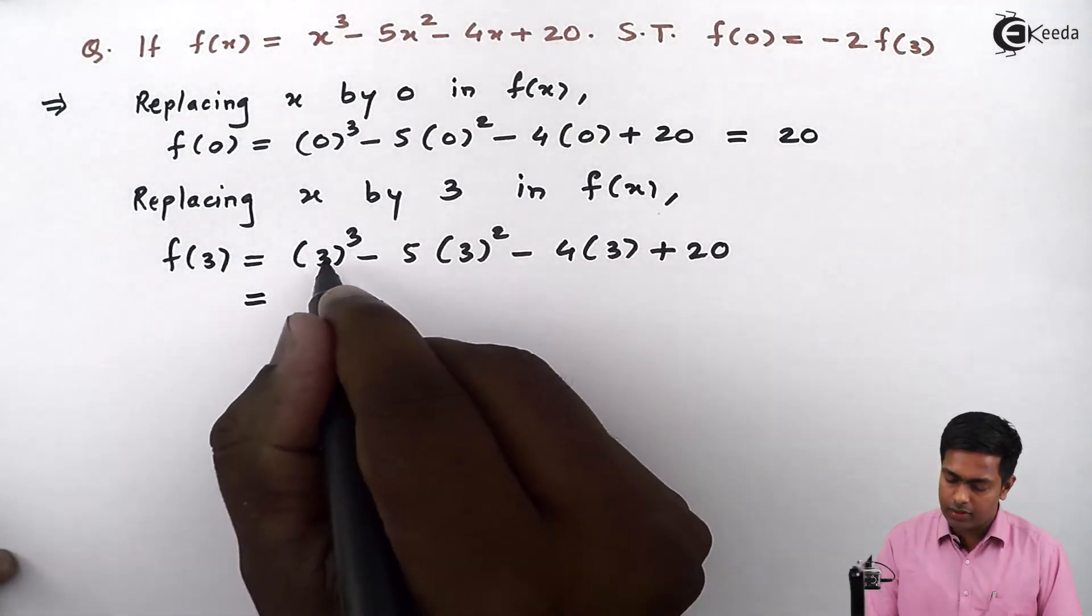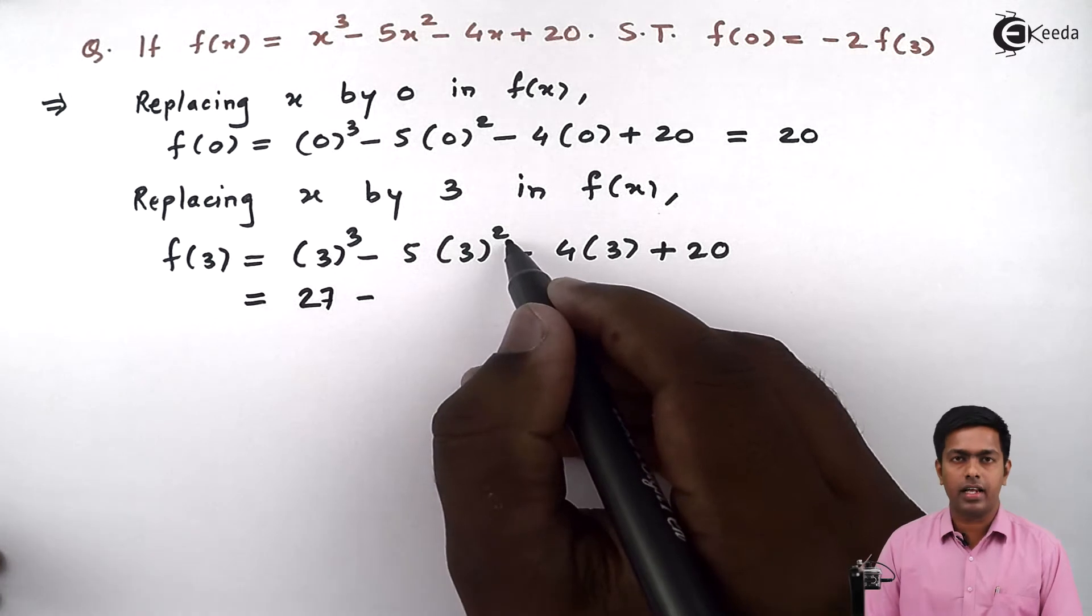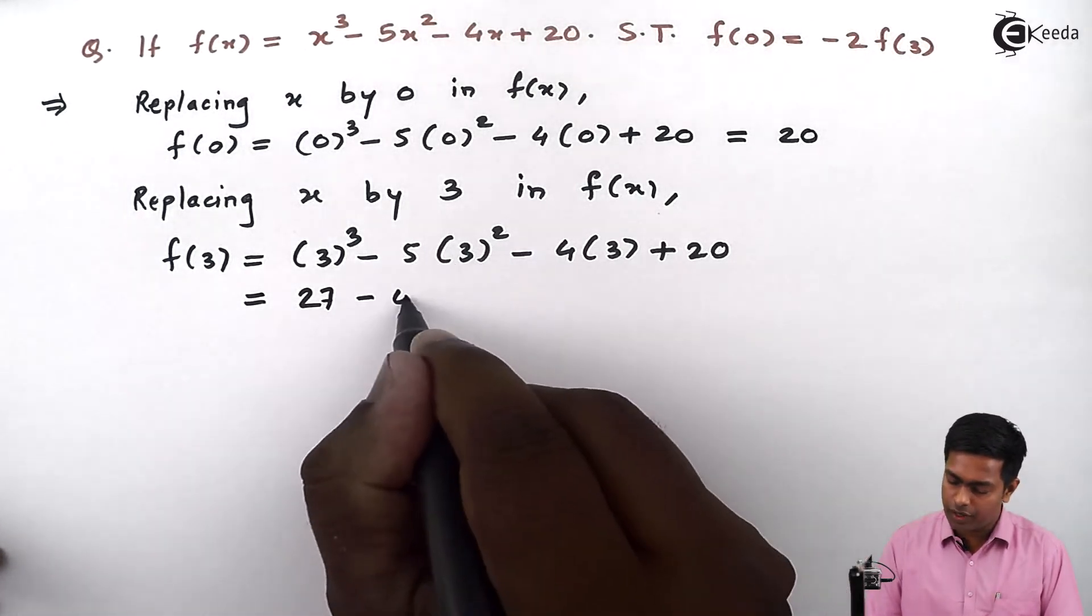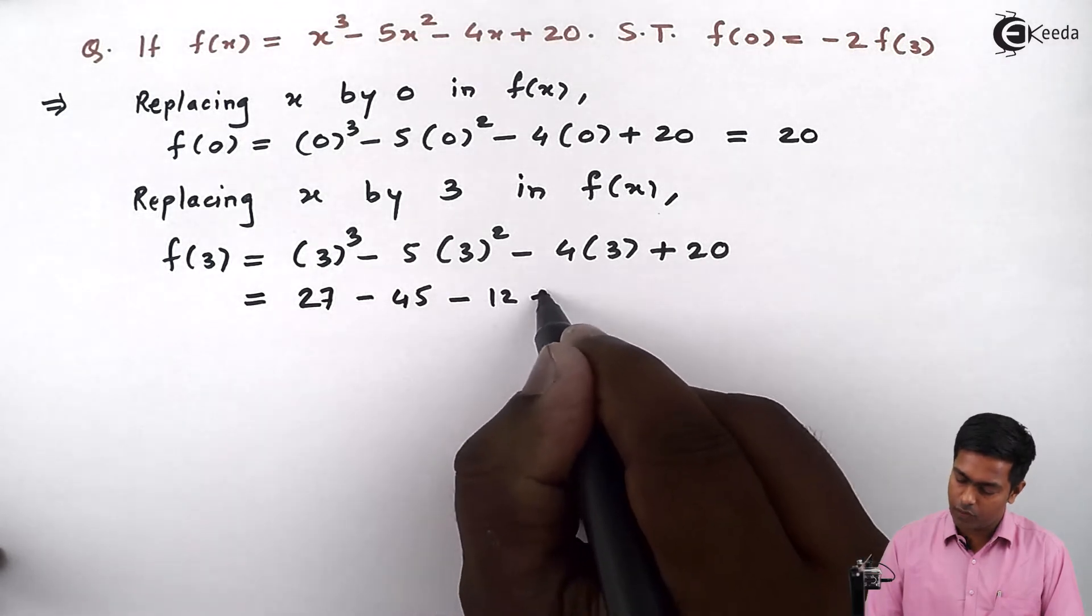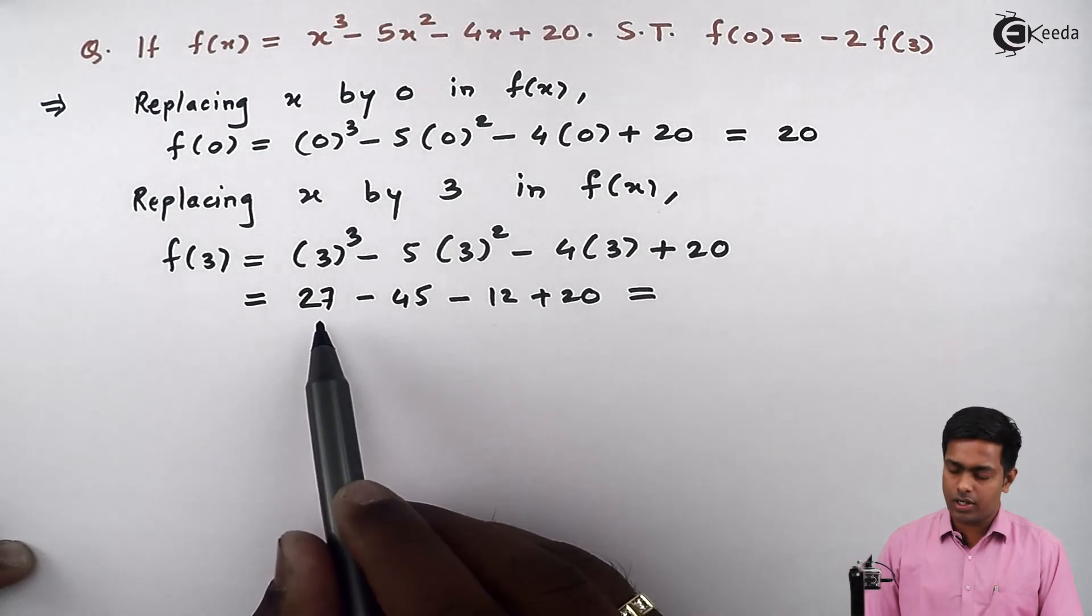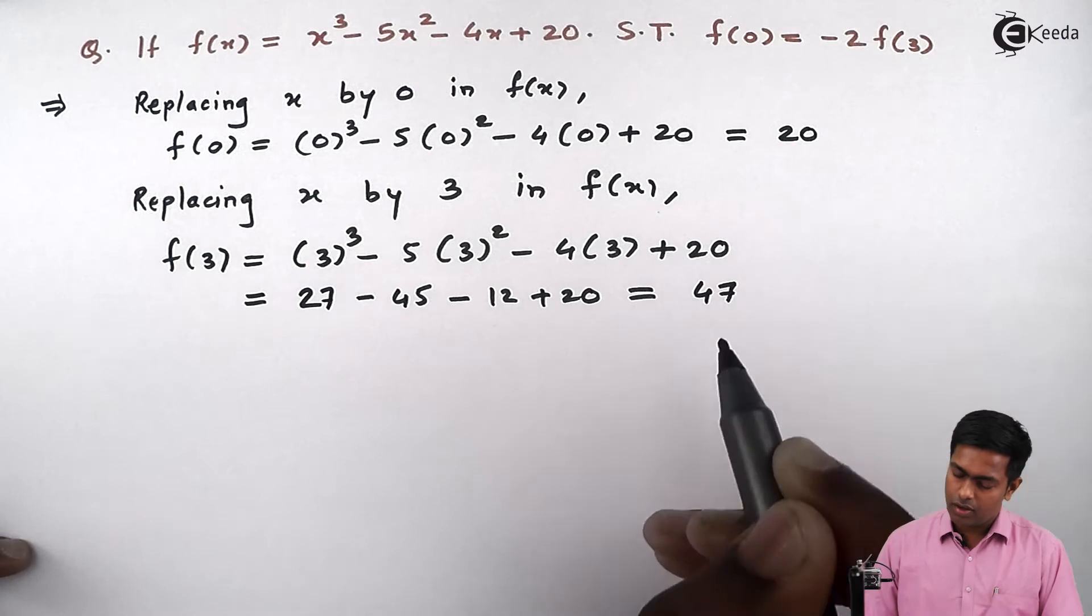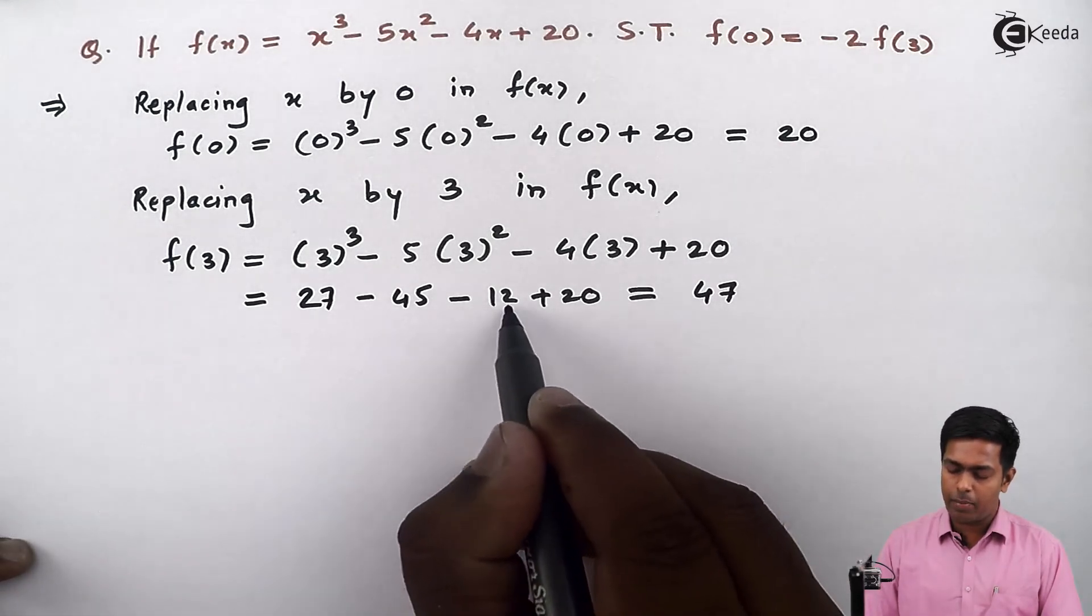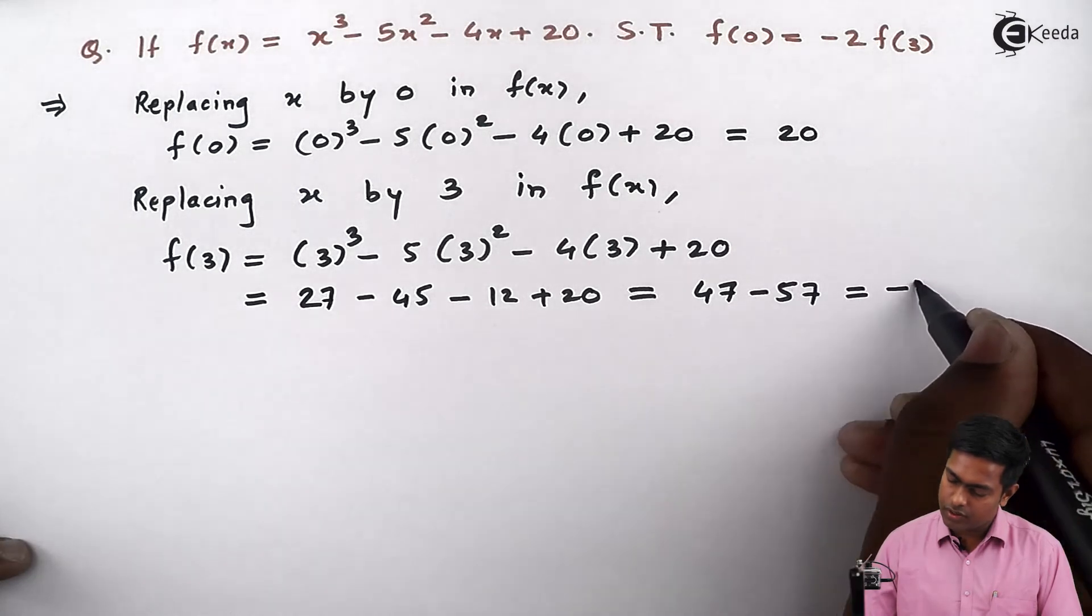Now we know that 3³ is 27, 3² is 9. So 5 times 9 is 45, 4 times 3 is 12. So this term will give us 27 plus 20 which gives us 47, and minus 45 and minus 12 will give us 57, and this will give us -10.